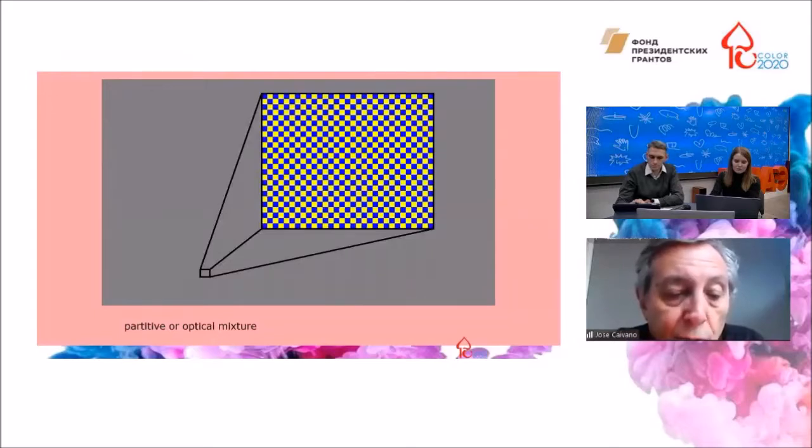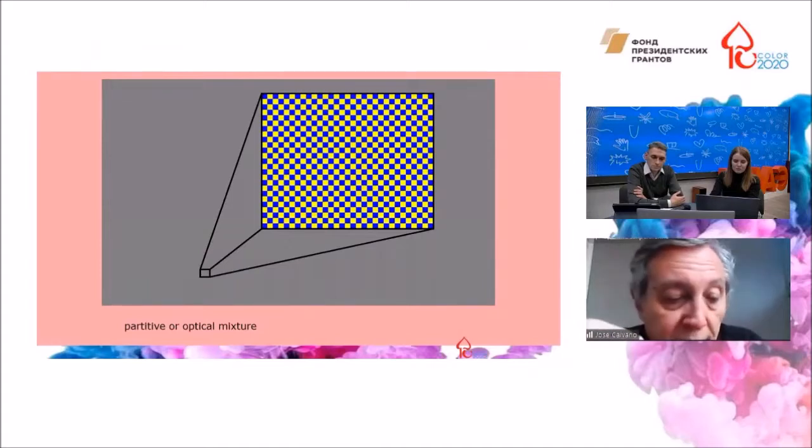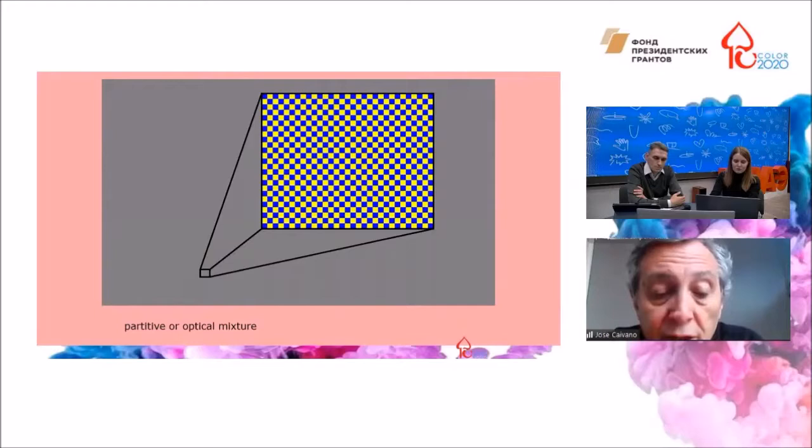The case I'm going to show here is different. We perceive a uniform gray field on the background, but if we enlarge a small sector, we can see that it is composed of adjacent yellow and blue small dots or squares. This example is similar to the pointillist or divisionist technique of painting.